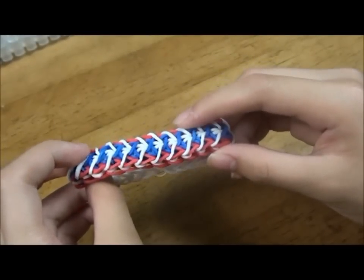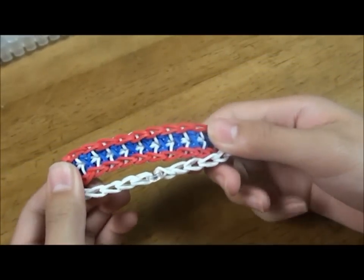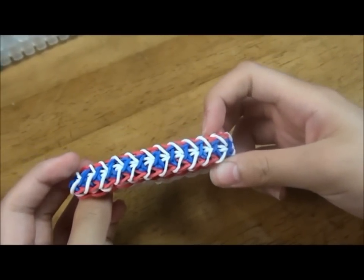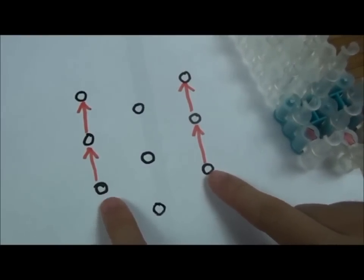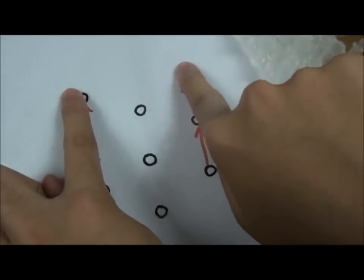Hi, I'm going to show you how to make this bracelet. First, we're going to lay red rubber bands forward on both sides all the way to the end.